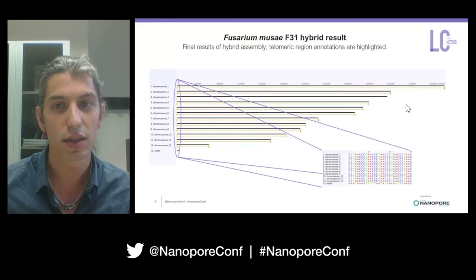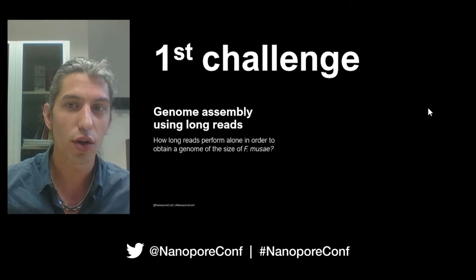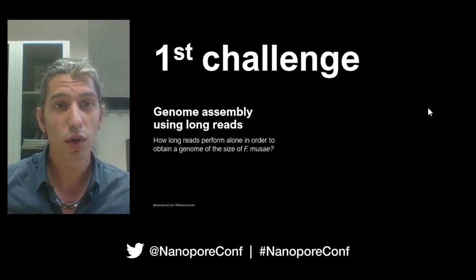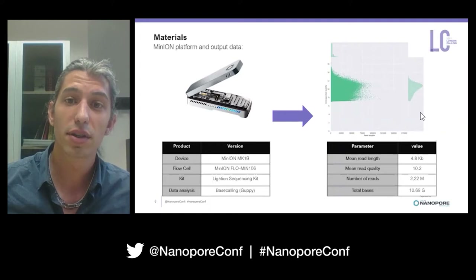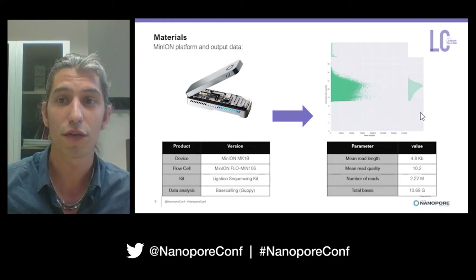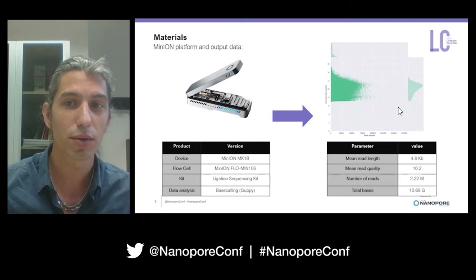What makes us very excited — and is also the reason why I'm presenting now — are the results obtained before short-read correction. We want to try to answer the question: how do long reads perform alone in order to obtain a genome of the size of Fusarium musae? For long-read data, we used the MinION device, which produced more than 2 million reads with an average length of 4.8 kilobases. Two tables report the experimental information and the results after base calling.